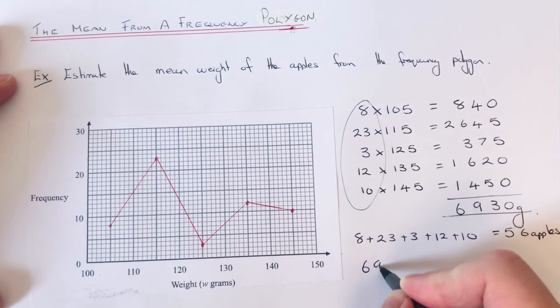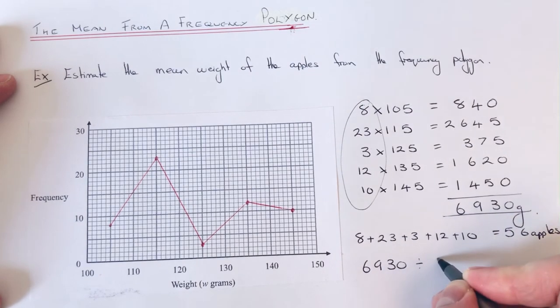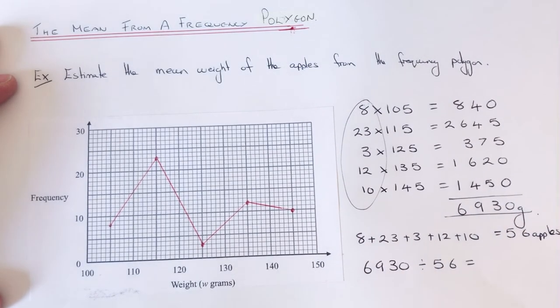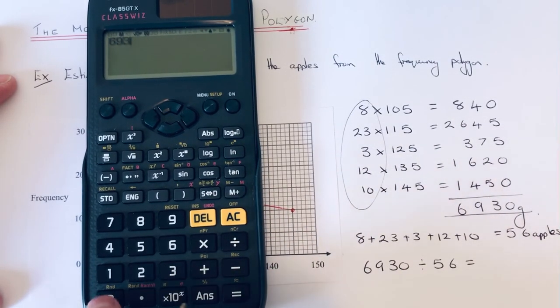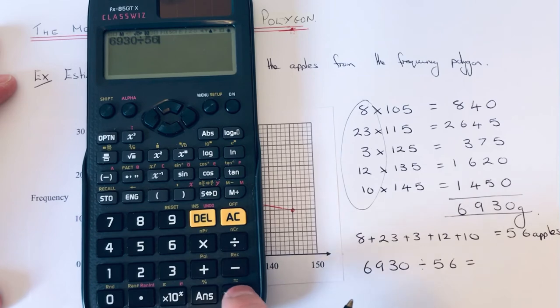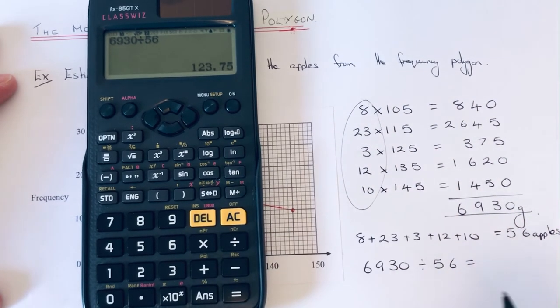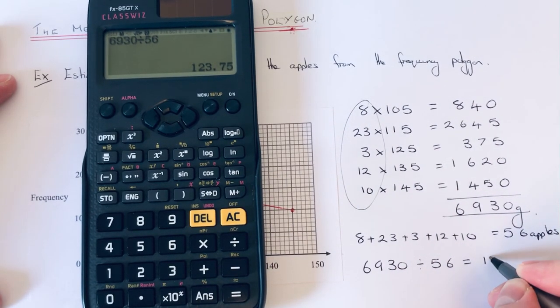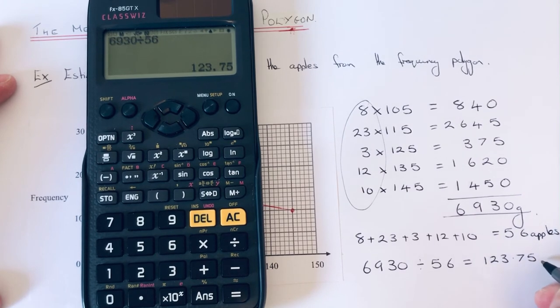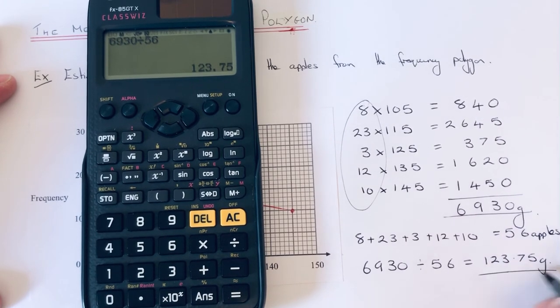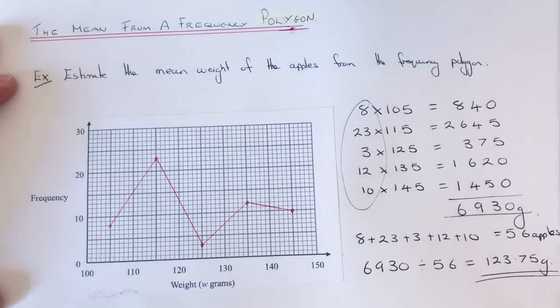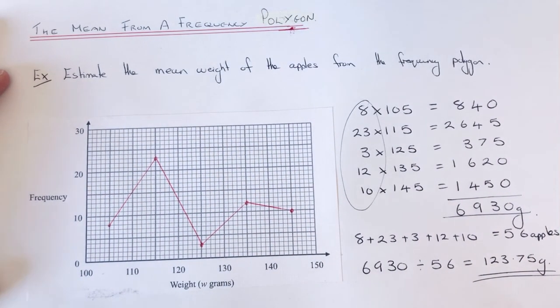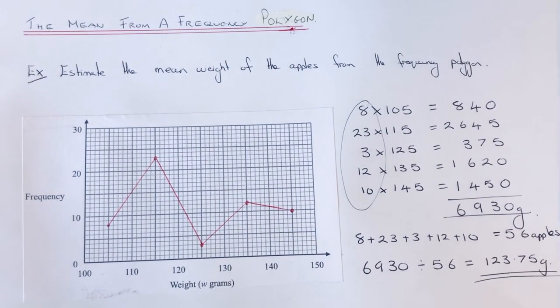That gives us 123.75 grams. So that is the estimate for the mean weight of an apple. If you like this video make sure you like and subscribe and I'll see you next time, bye.